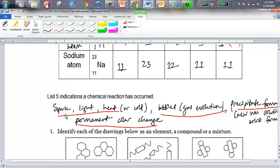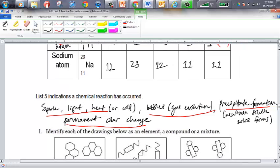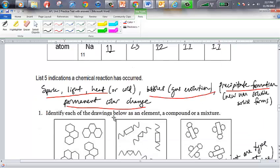Chemical indications of spark would be things like sparks, light, heat, or cold. That's an indication of energy transfer, and very many chemical reactions have a transfer of energy associated with them. Bubbles or gas evolution is a sign of a chemical reaction. Formation of a new non-soluble solid, which is a precipitate forming, that's a sign that a chemical reaction has occurred. And a permanent color change would be a sign that a chemical change has occurred.